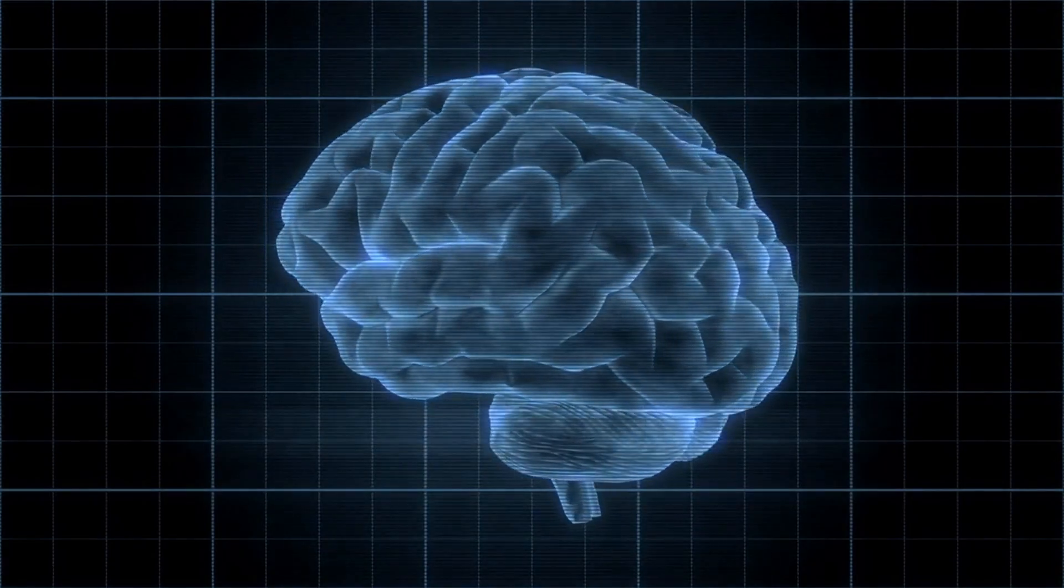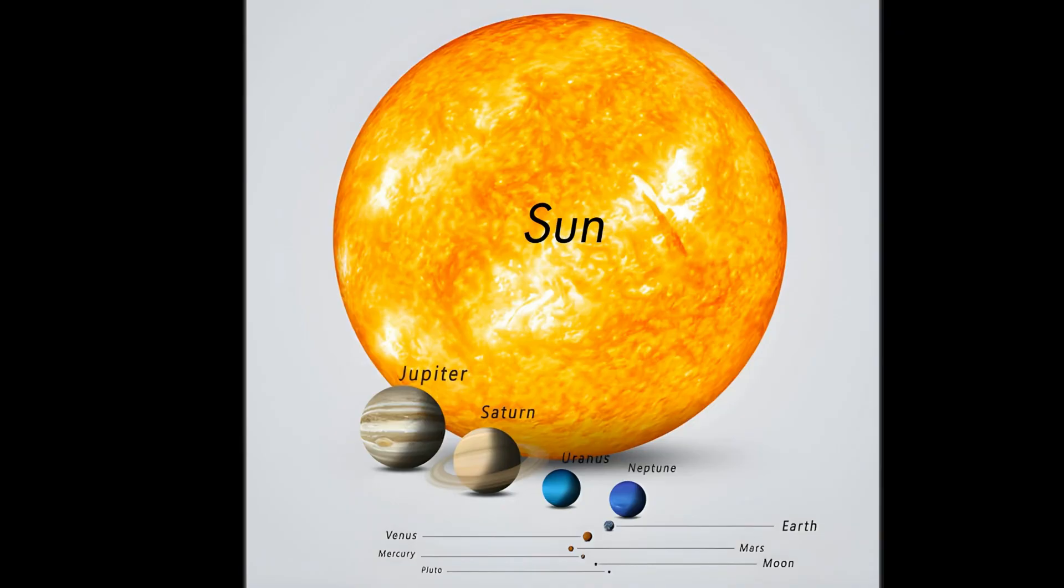Yeah, it's hard to wrap our heads around that, right? Looking at this true-to-scale image of the celestial bodies in our solar system, it's tough to picture the sun holding 1.3 million Earths.